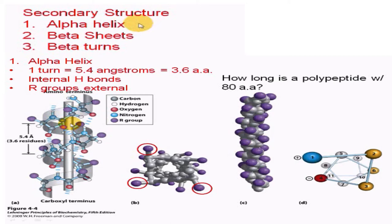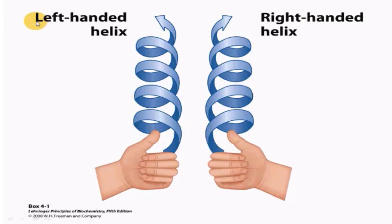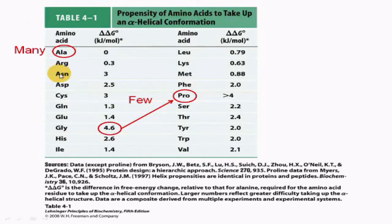In the alpha helix, hydrogen bonds are internal whereas the R groups face externally. Alpha helix exists in two types: left-handed helix and right-handed helix. Alpha helix consists of certain amino acids in greater quantity, such as alanine, whereas certain amino acids like glycine and proline are present in smaller quantities.